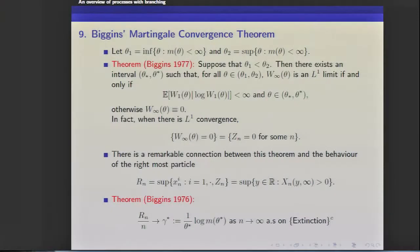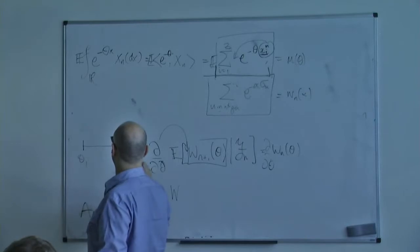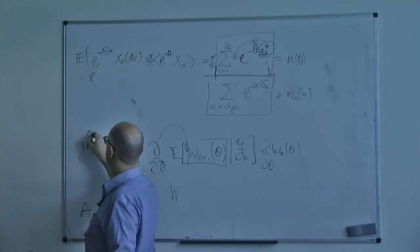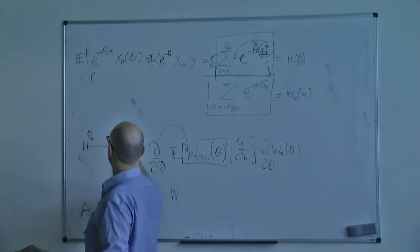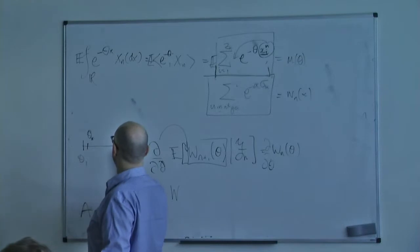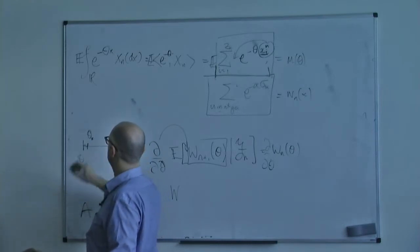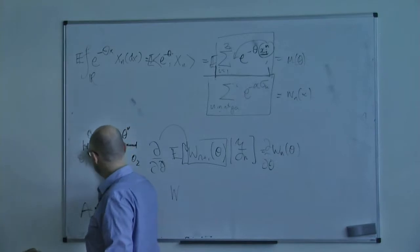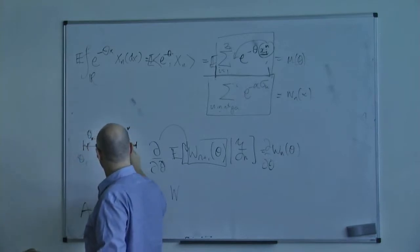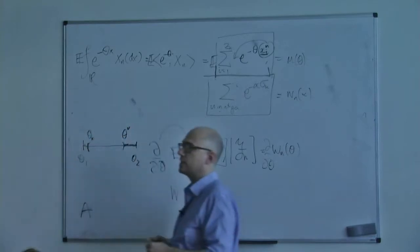You can only talk about this martingale when you're dividing by something which is finite - that's the m(theta). So you have theta_1, theta_2, and embedded in that is theta lower star and theta upper star. The martingale goes to zero here, and in the open interval it has a good limit.